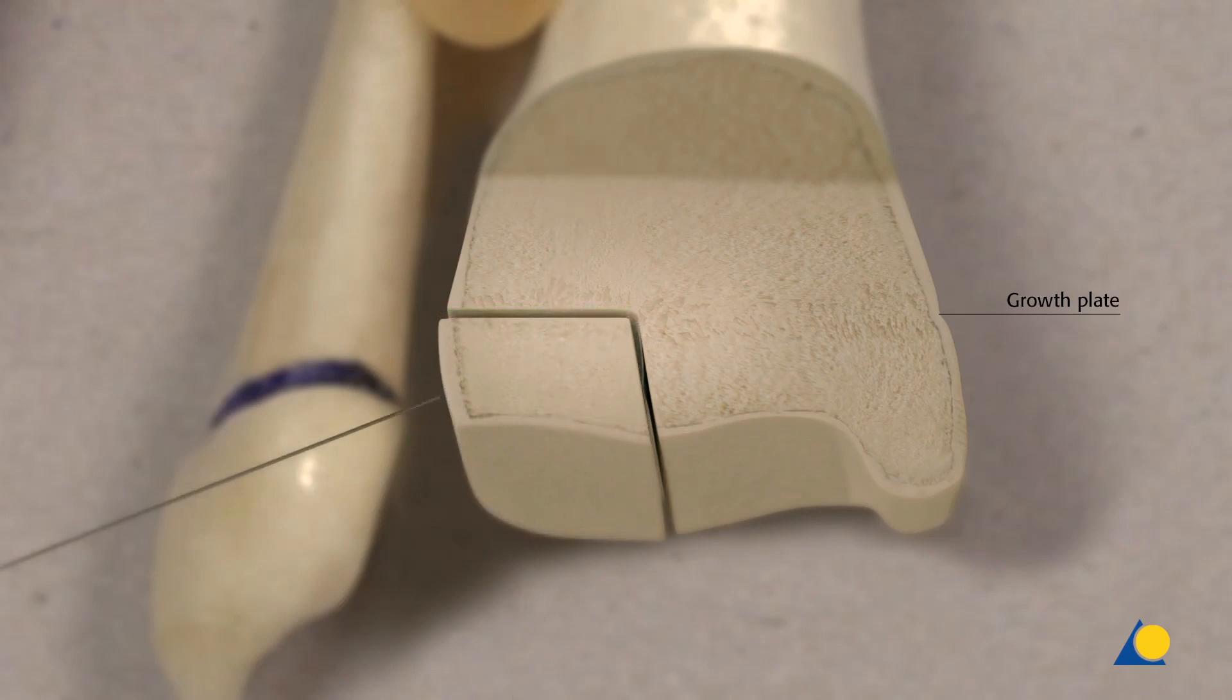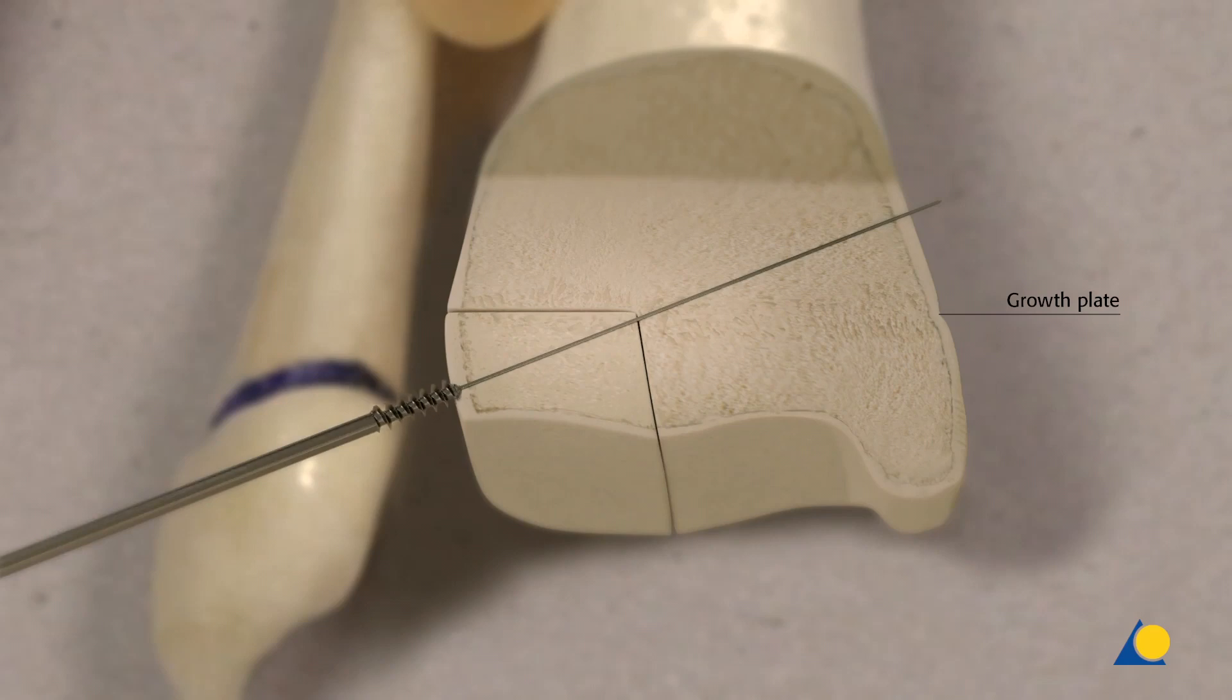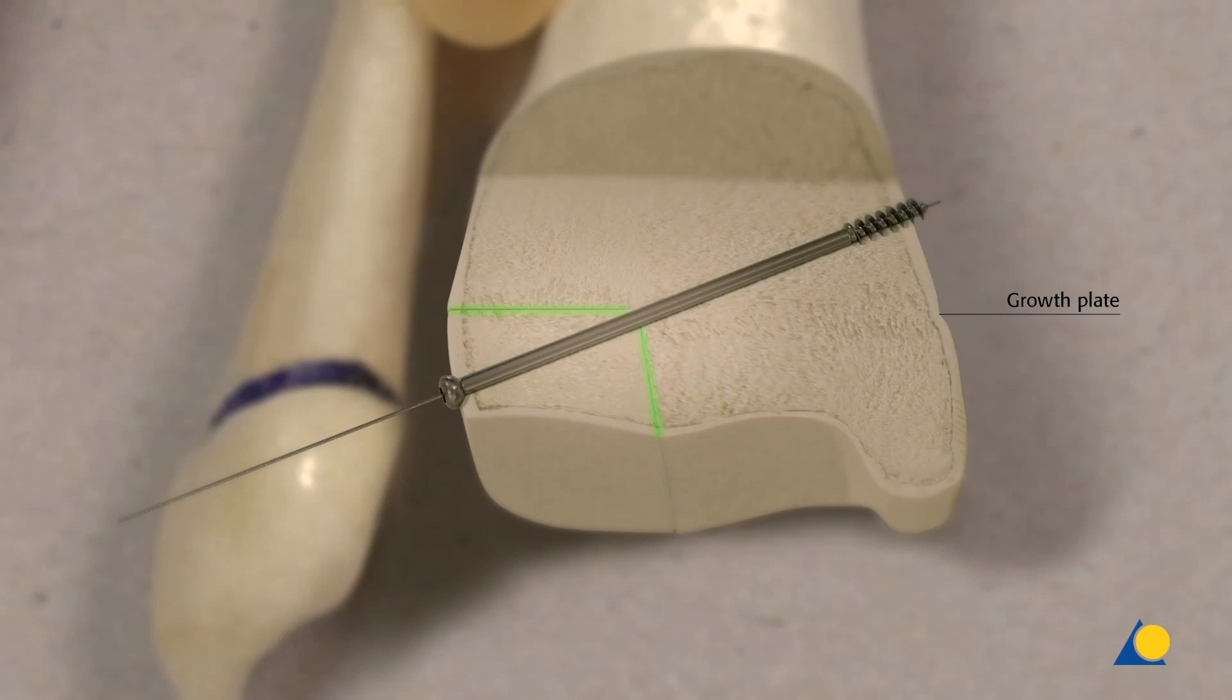An oblique screw technique will stabilize, reduce, compress and fix the fracture. The biomechanical principle of this technique is the vector geometry. The forces should be resolved correctly to avoid a step in the joint. The articular surface of the joint and the physis is reduced without displacement.